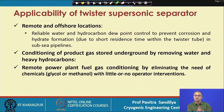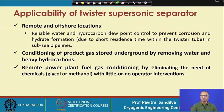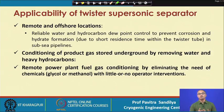The twister supersonic separator is particularly suited for remote and offshore locations for reliable water and hydrocarbon dew point control to prevent corrosion and hydrate formation — with very little contact time between hydrocarbons and water, the possibility of hydrate formation is reduced. It is used for conditioning product gas from underground by removing water and heavy hydrocarbons, and for remote power plant fuel gas conditioning, eliminating the need for external chemicals and operator interventions — a significant advantage in remote locations where chemical replenishment is not always feasible.